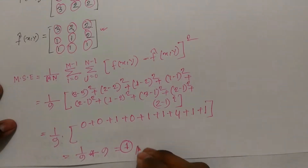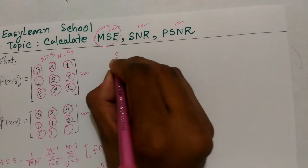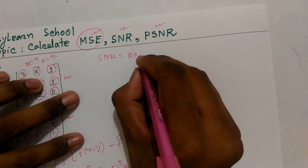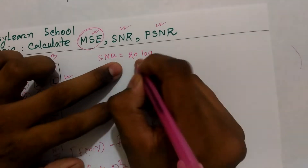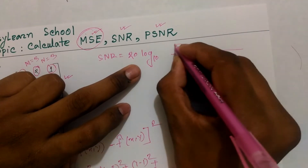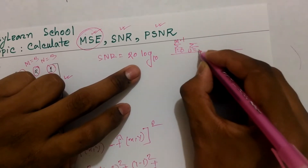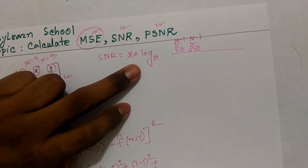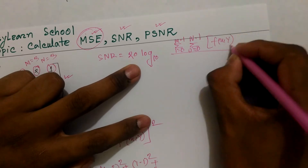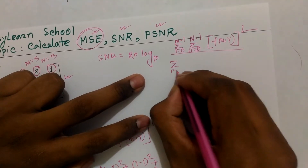MSC value. MSC value SNR. The formula will be written as 10 log, and will be written as 10 log.